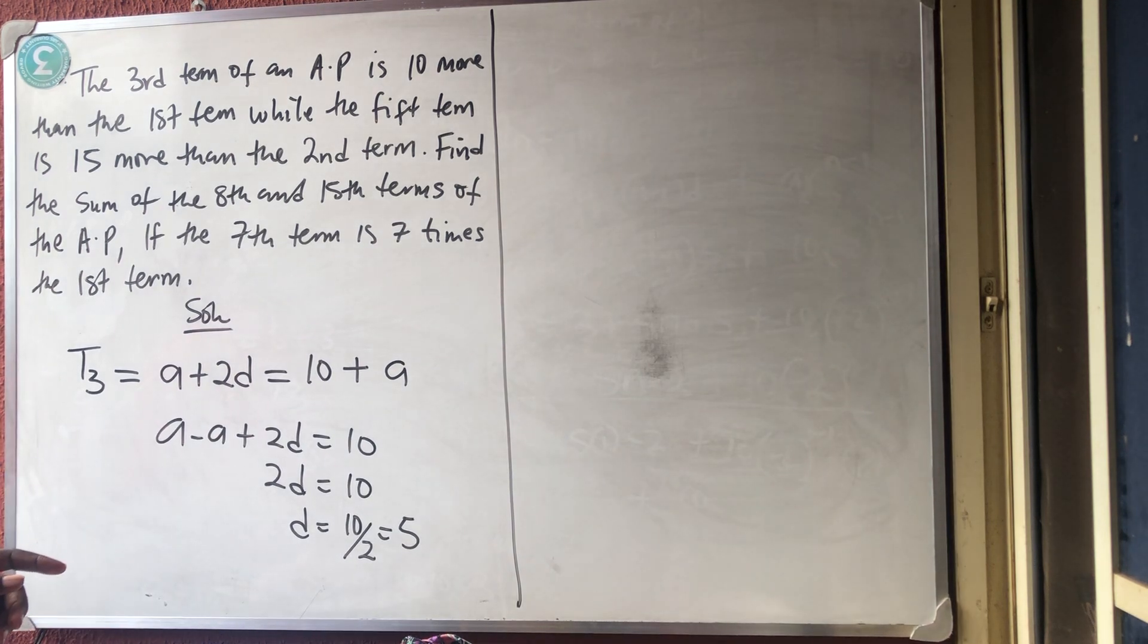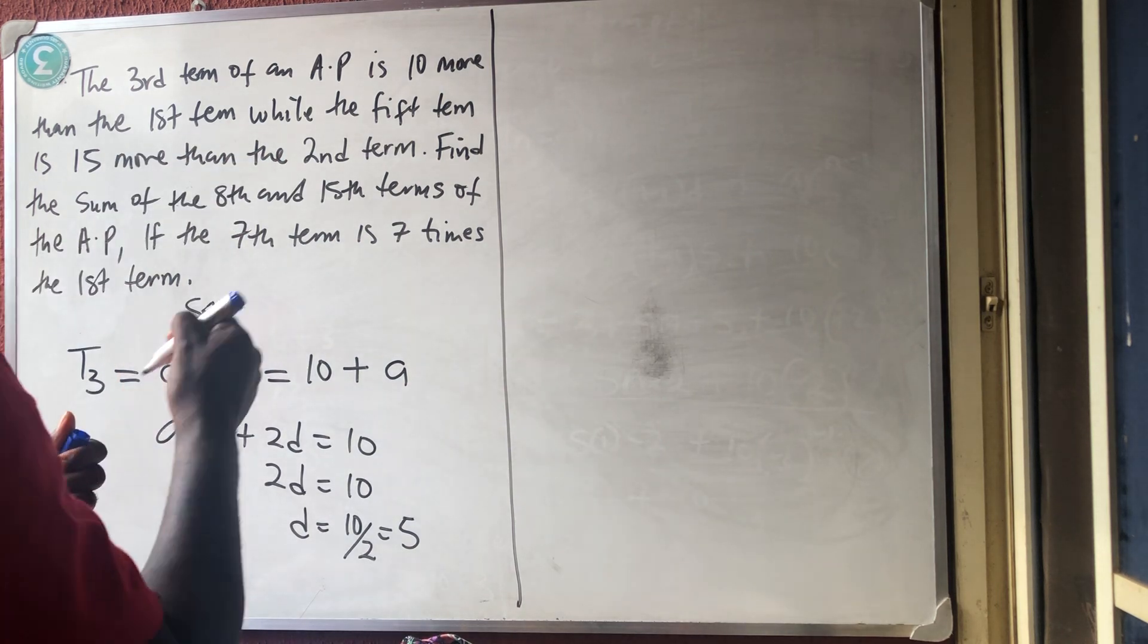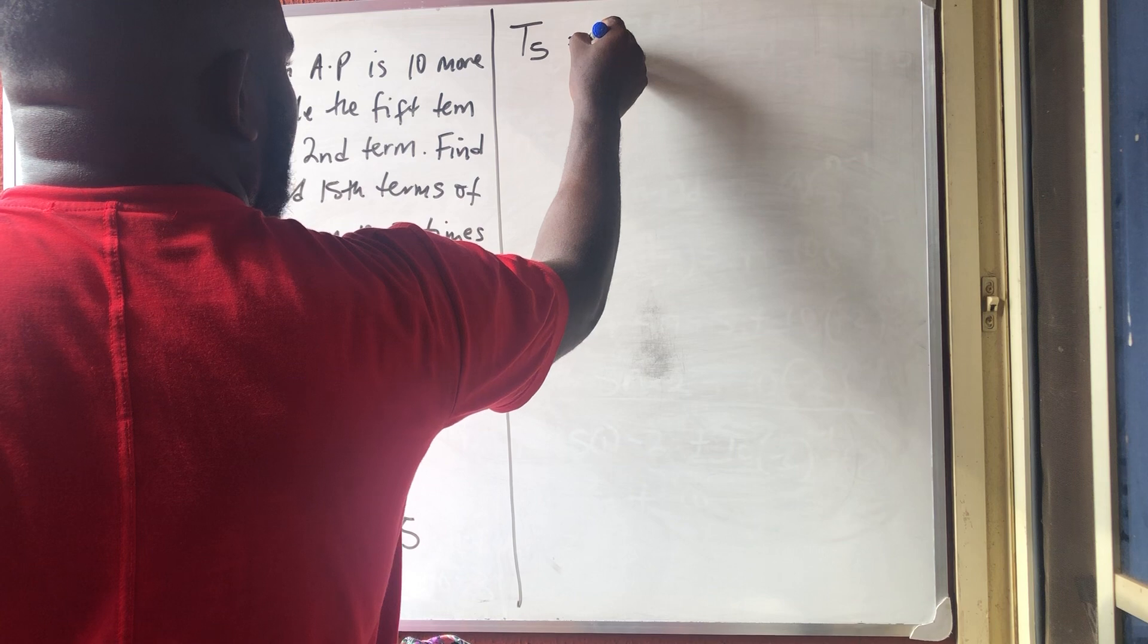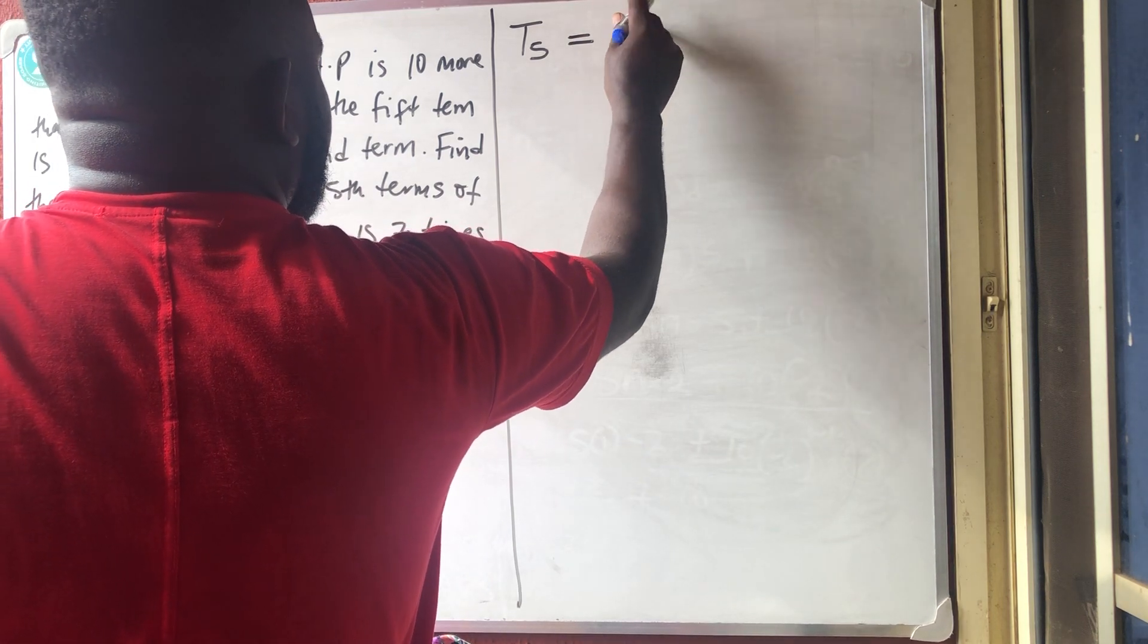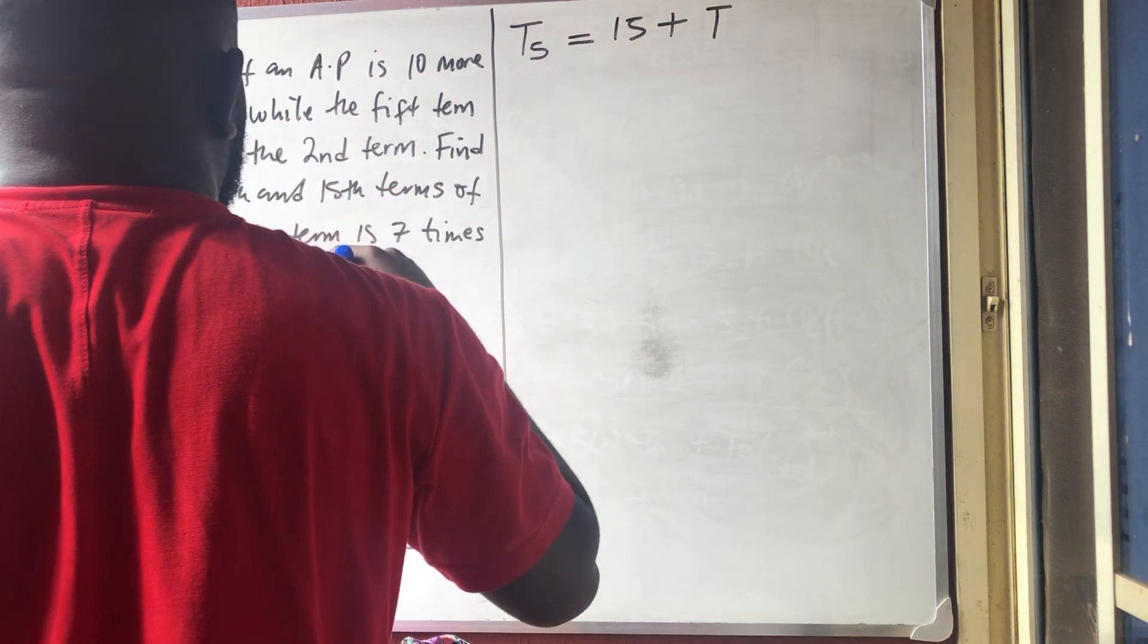So, the next statement said that while the fifth term is 15 more than the second term, okay? They said that the fifth term, T5, is equal to, let me say it's 15 more than the second term.